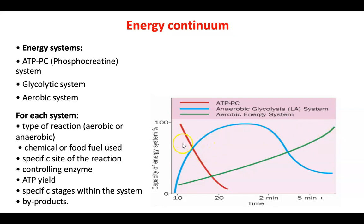There are crossovers or thresholds between the systems. When the ATP-PC system starts to get depleted and we begin using the glycolytic system, this is called the ATP-PC and glycolytic threshold. And when the glycolytic system starts to lose its way and the aerobic energy system takes over, this is known as the glycolytic aerobic threshold.